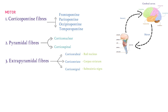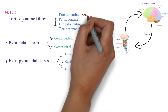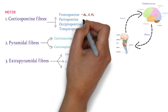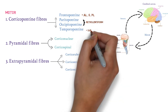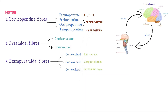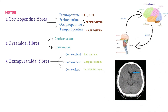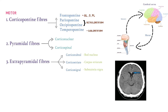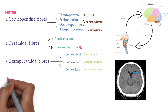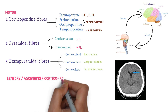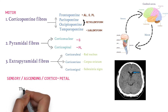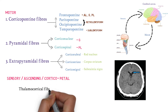These fibers pass through specific parts of the internal capsule. Frontopontine fibers pass through the anterior limb, genu, and posterior limb. Parietopontine and occipitopontine fibers pass through the retrolentiform part, while temporopontine fibers pass through the sublentiform part. This is clinically important: if a lesion occurs in a specific part, the corresponding fiber is damaged and produces a clinical response. Corticonuclear fibers are in the genu, and corticospinal fibers are in the posterior limb. The sensory ascending corticopetal fibers are thalamocortical fibers, starting from the thalamus and ending at the cortex.